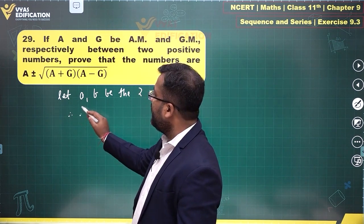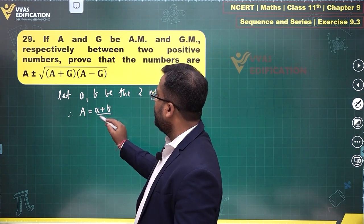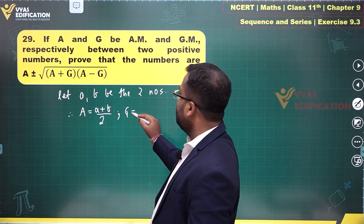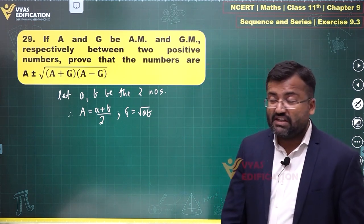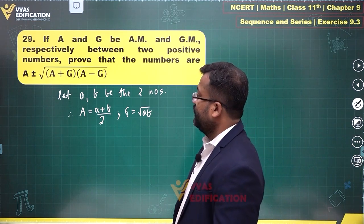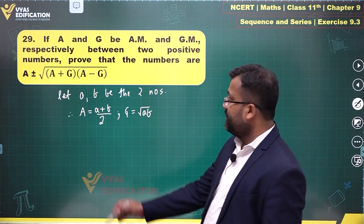A = (a+b)/2, G = √(ab). We are supposed to find the numbers in terms of A and G. Let's begin.